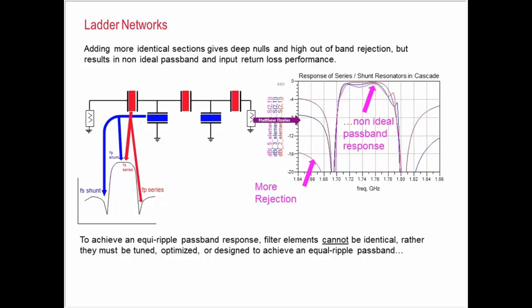The challenge is, so you can get great rejection. You can see the nulls are getting much, much deeper as we add more elements. But the problem is if we use the exact same element in series and then the exact same elements in shunt, I would get a passband response that doesn't look great. It ends up looking kind of ripply. So it's not completely ideal.